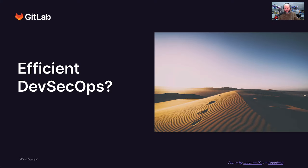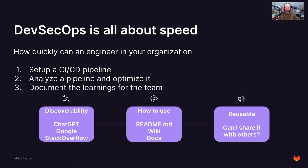Let's dive into what does efficient DevSecOps actually mean and what can we improve? DevSecOps is all about speed. Consider the following question: how quickly can an engineer in the organization set up a CI/CD pipeline, or even analyze a pipeline and optimize it based on learnings, and then document those learnings for the team? It's really important to consider discoverability using AI tooling, Google, Stack Overflow, or GitLab Duo Chat — how to use CI/CD, having a README in the repositories.